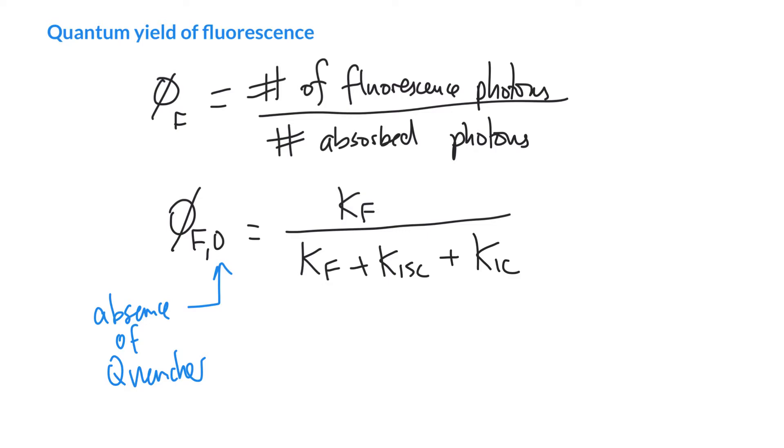Now you might recognize the denominator of this expression. So one over kF plus k inter-system crossing plus kIC. And earlier we called this tau. So we can rewrite this expression as kF times by tau. And actually I'm going to write that tau zero. So tau is this lifetime of the excited state. It's a measure of how long it takes before one over e of it decays away. The zero again is telling us that it's in the absence of a quencher.